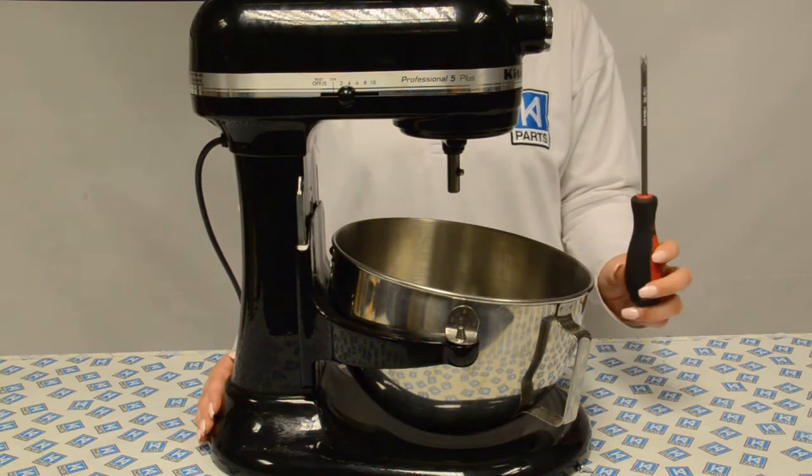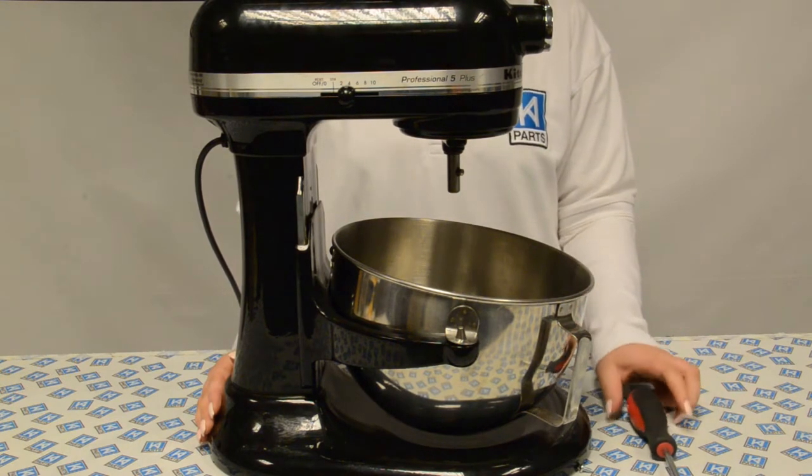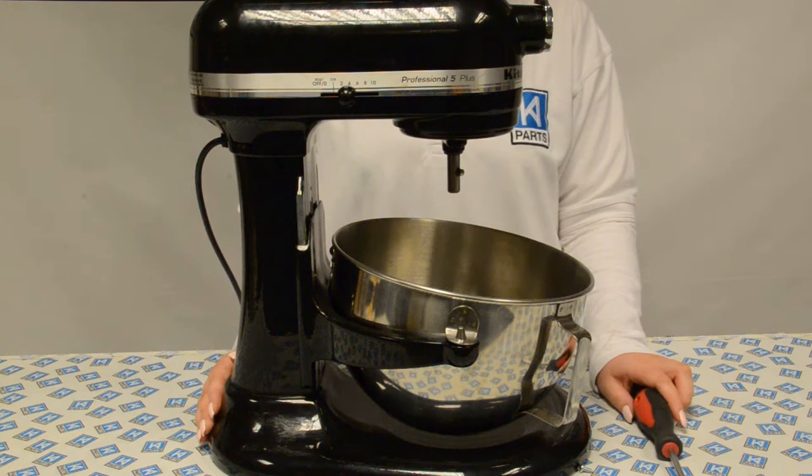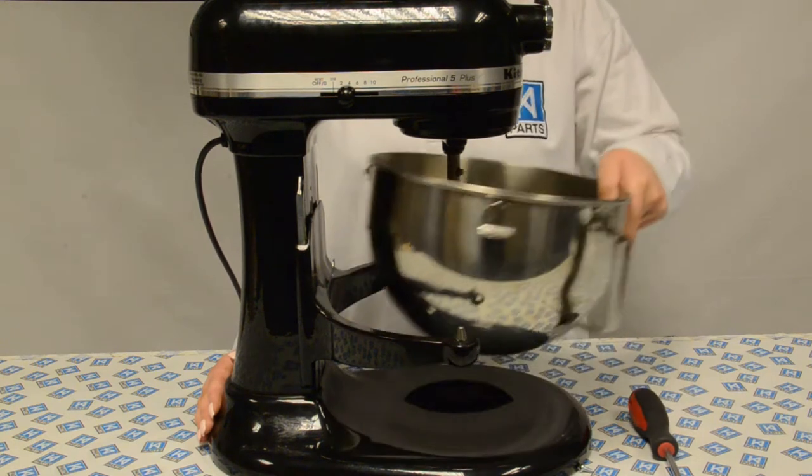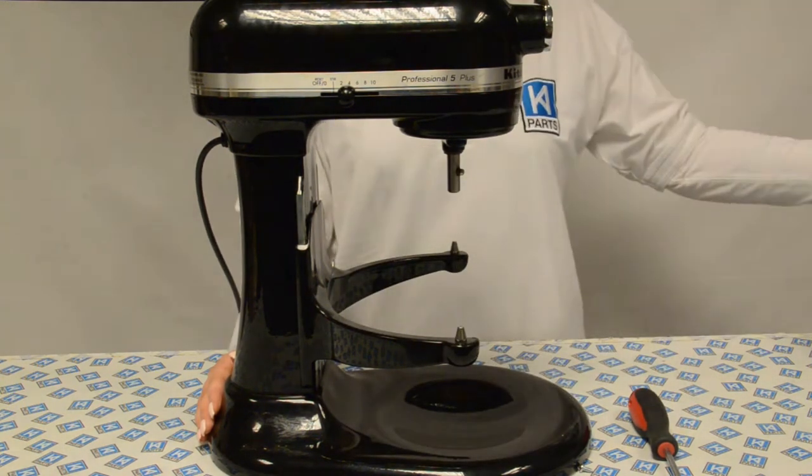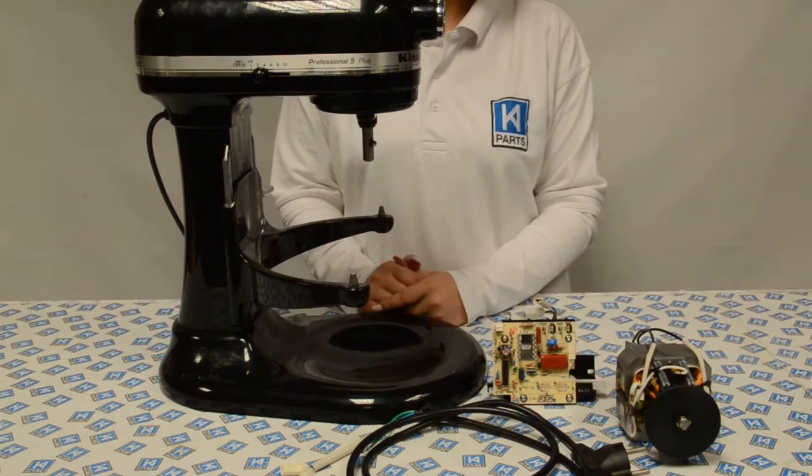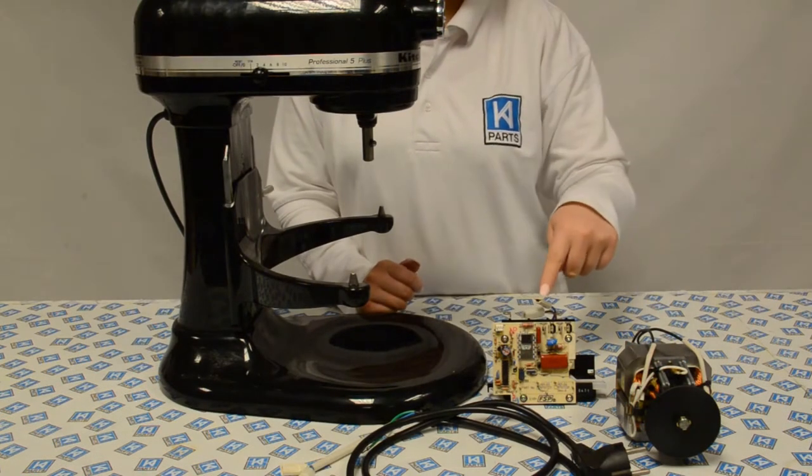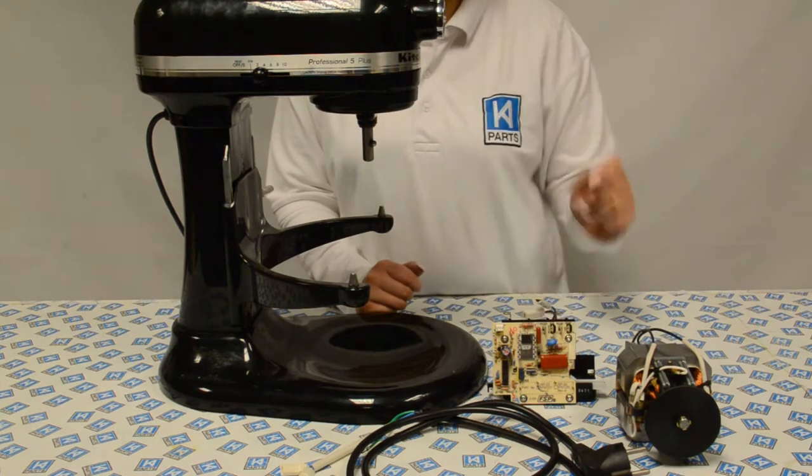We will be using a Philips PH2 screwdriver for the whole conversion. Take off all the removable parts such as the bowl and the beater. The parts we will be replacing are the motor, control board, power lead, and we'll also be adding a new RF filter.